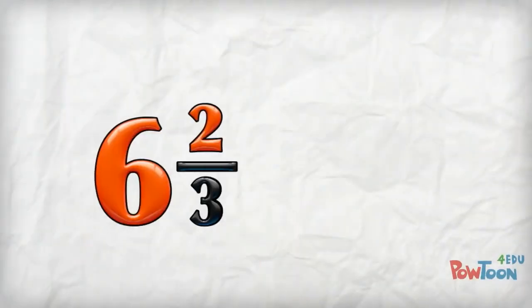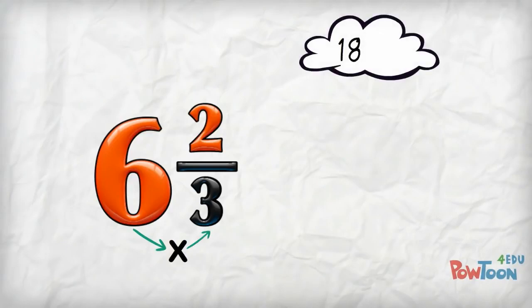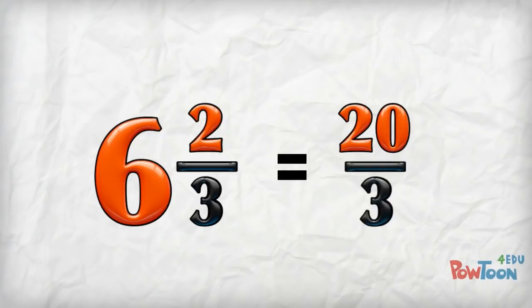6 and 2 thirds. 6 wholes. Each whole is worth 3 parts. So 6 times 3 is 18. Add the remaining 2. That's 20 parts. Put that back over the denominator of 3. Done!